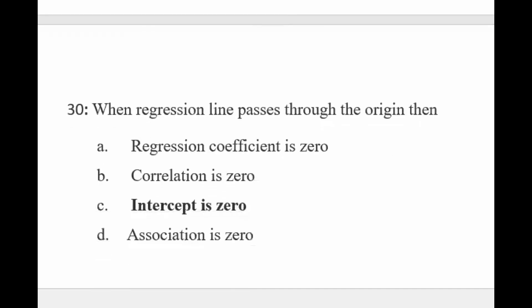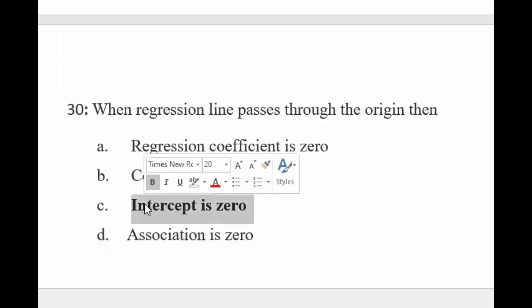When the regression line passes through the origin, then: regression coefficient is 0 — nahi. Correlation is 0 — nahi. Wahan par intercept 0 hoti hai — jo hum ne regression ke formula mein briefly discuss kiya hai ke intercept hamare paas zero hogi.